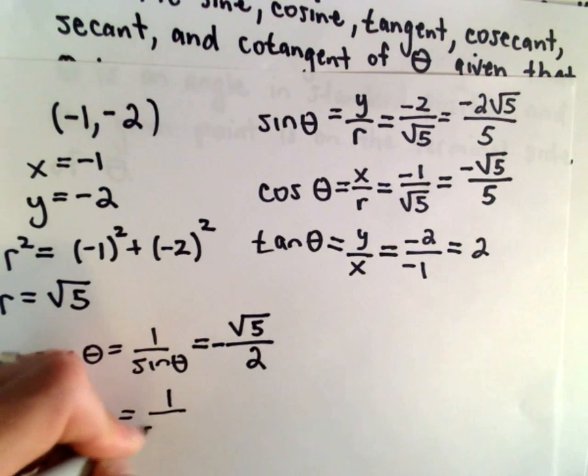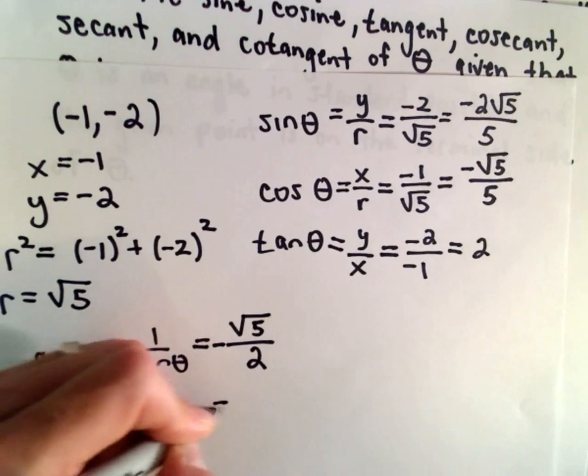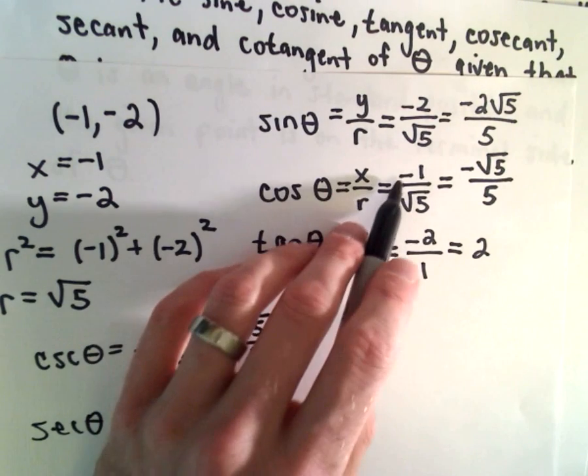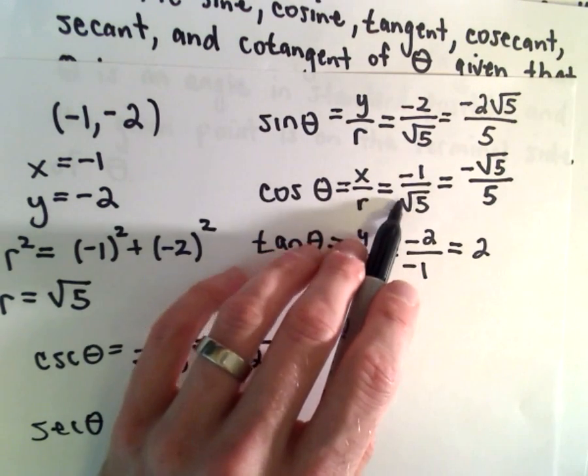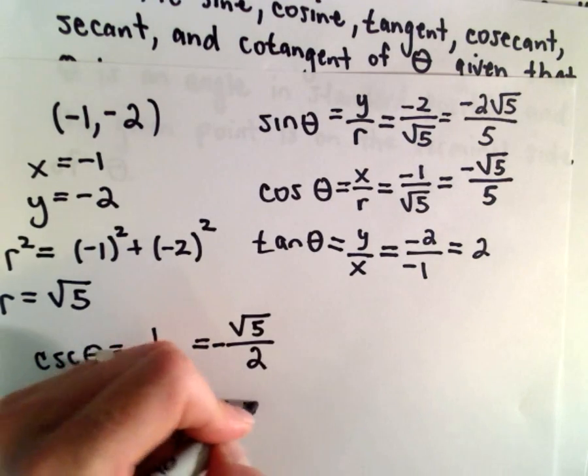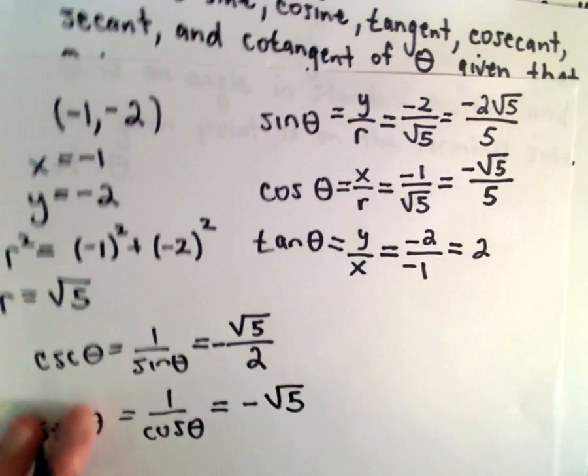Secant of theta, well that's 1 over cosine theta. Again cosine of theta was negative 1 over root 5. If we take the reciprocal we'll just simply get negative root 5.